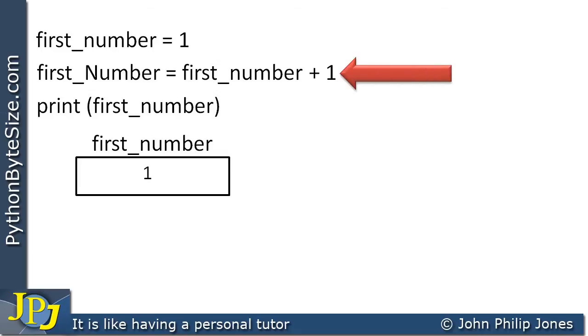Then we'll go on to the next line, which is this one here. On the right-hand side, we can see that we have first_number plus one. That will obviously give us two.